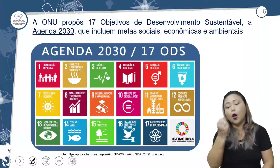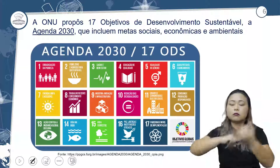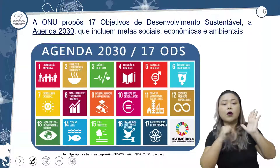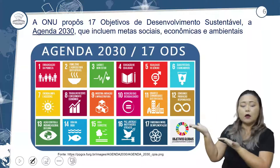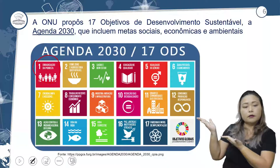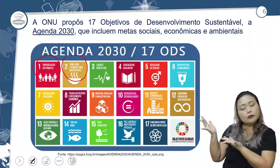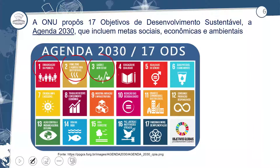A ONU propôs 17 Objetivos de Desenvolvimento Sustentável na Agenda 2030, que inclui metas sociais, econômicas e ambientais: erradicar a pobreza, fome zero e agricultura sustentável, saúde e bem-estar, educação de qualidade, igualdade entre homens e mulheres, água potável e saneamento. Ainda há milhões de pessoas no mundo que não têm acesso a água potável.